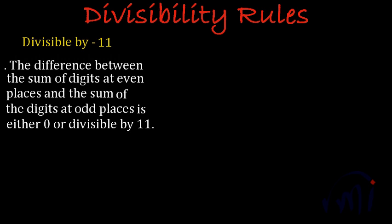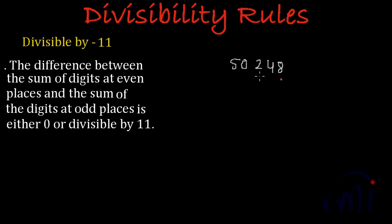Suppose we have a number like 50,248 — it is a big number, so we have to check its divisibility. The first step is to identify the digits at even places and odd places. If we start counting from the rightmost side, 8 is at the first place (odd), then the third, and the fifth number are also at odd places.